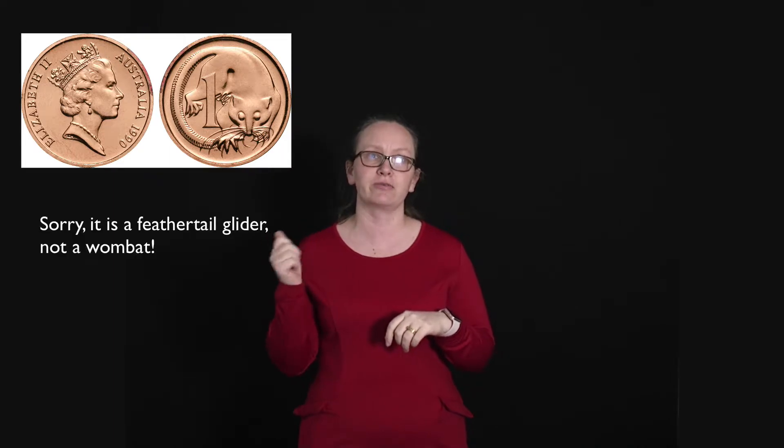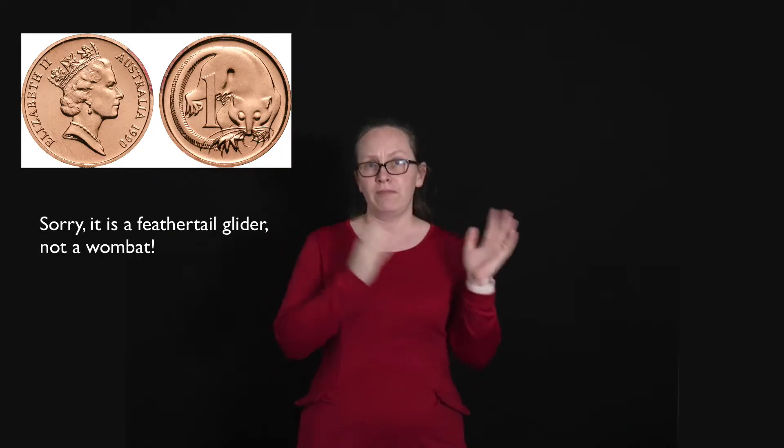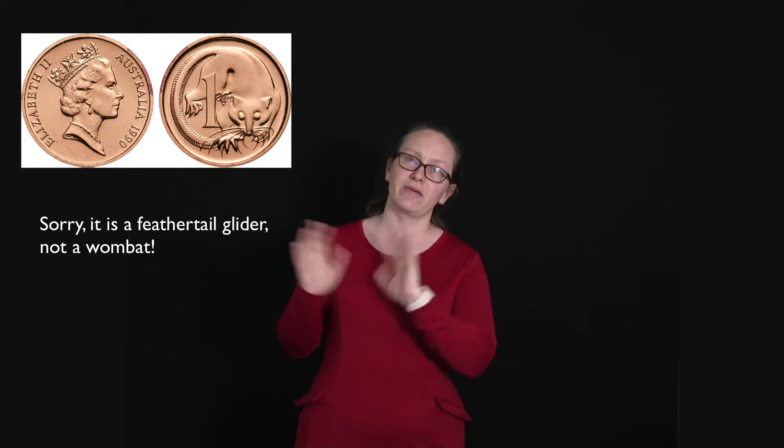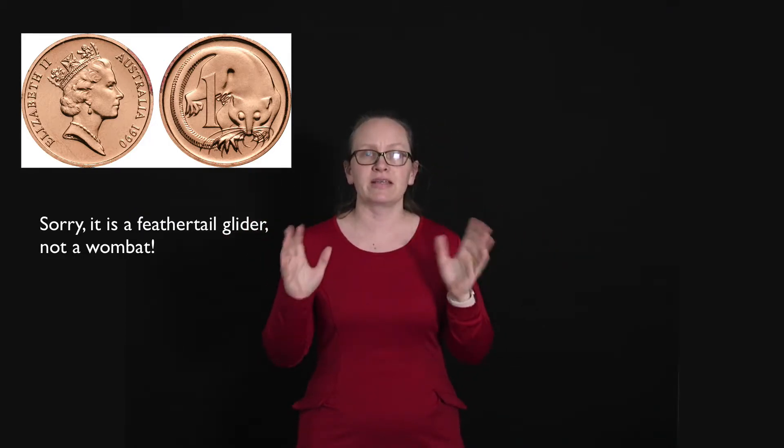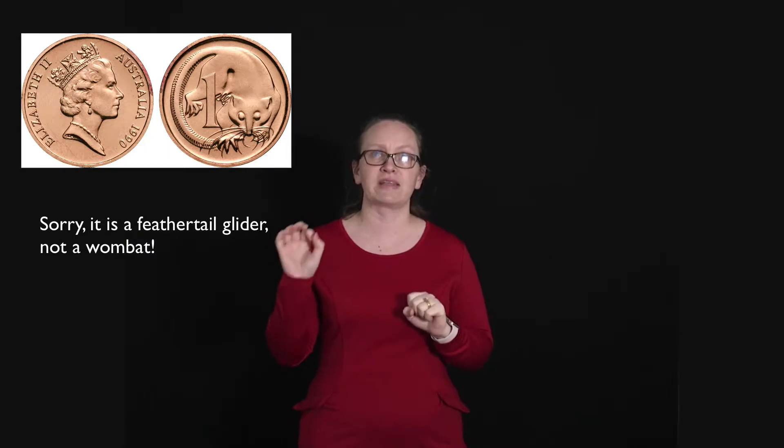A couple of examples that you're probably aware of is in the olden days before we had bank transfers and credit cards, people used to pay for things with money, coins and notes. In this case, the smallest increment of money that was possible to use was the one cent coin, which used to have a little wombat on it. So back then when these coins were the main way of transferring money, money was quantized in terms of that one cent coin.